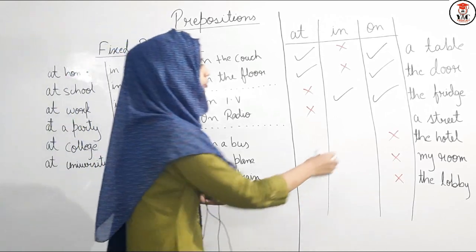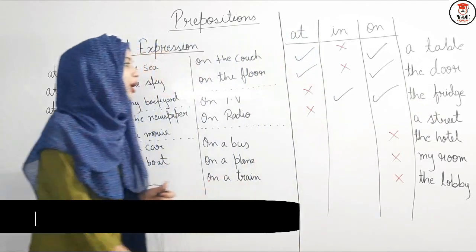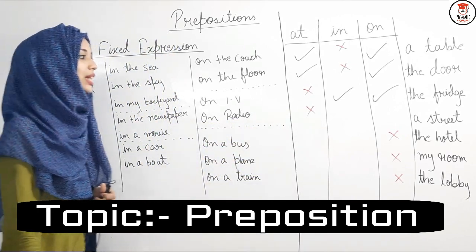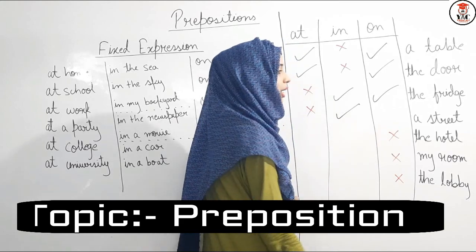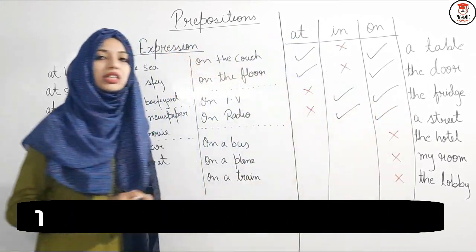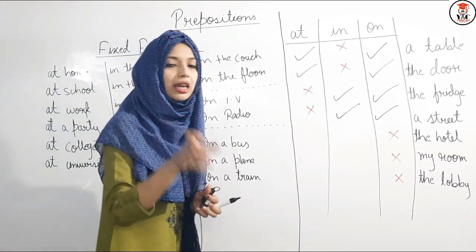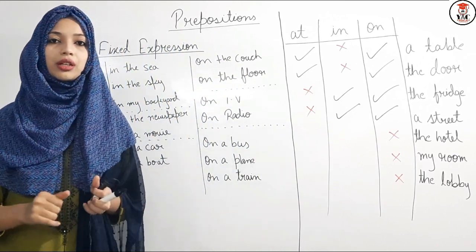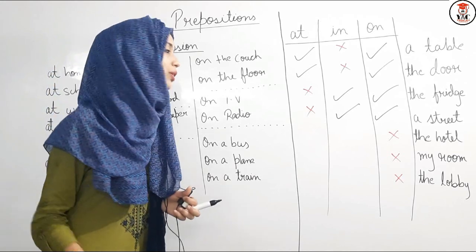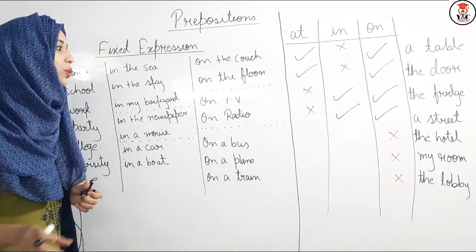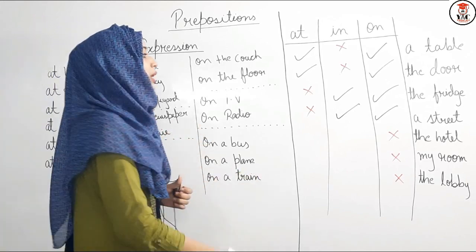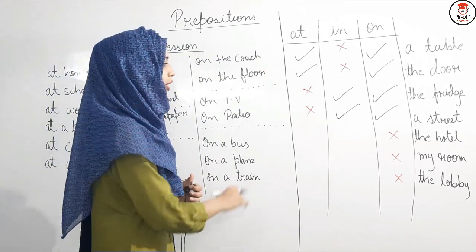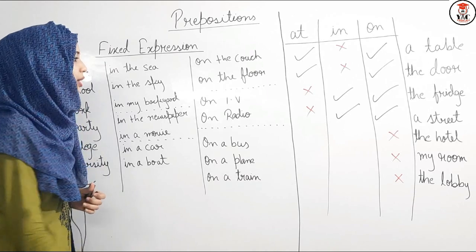My fourth example is 'street.' We cannot say 'at a street' — I've already marked that with a cross. We can say 'in a street' and 'on a street.' 'In a street' means you are walking in the middle of the street, which can be dangerous. 'On a street' means you are walking on the side pavement of the street.